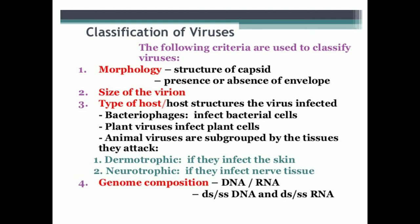The last criterion is genome composition — that is, on the basis of DNA and RNA, we classify viruses. Some viruses are double stranded, called dsDNA. For example, rice tungro bacilliform virus and cauliflower mosaic virus both have double-stranded DNA. The second type is ssDNA, or single-stranded DNA. For example, the maize streak virus is an example of a virus having single-stranded DNA.